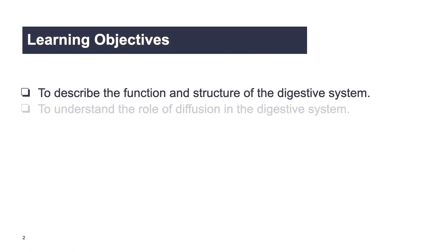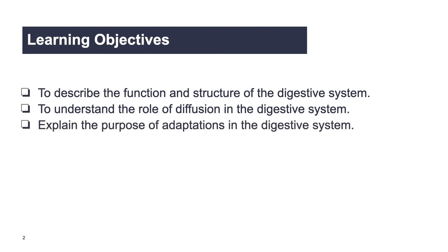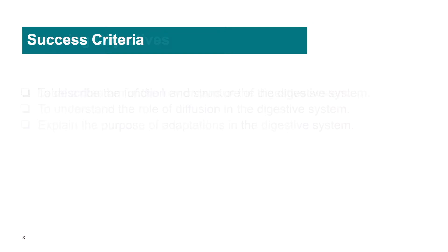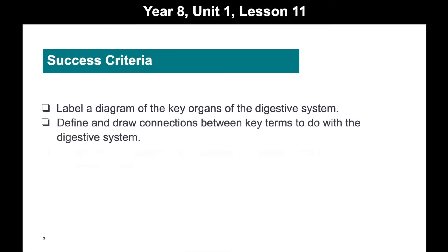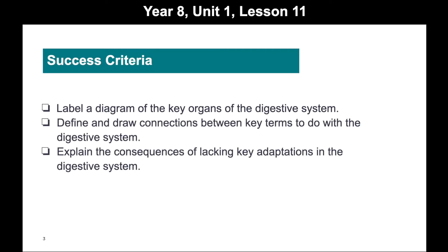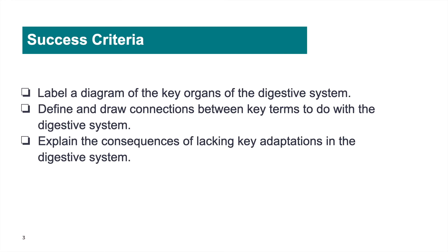You can see that I've tried to break a concept into small chunks that are clear to students, but also measurable. For me to know whether my students have learned what they need to learn, there must be something that they can make, say, write or do to demonstrate that knowledge. To demonstrate a comprehensive understanding of the digestive system, students need to know the function and structure of it, the role diffusion plays in its function, and why it has the particular adaptations that it does.